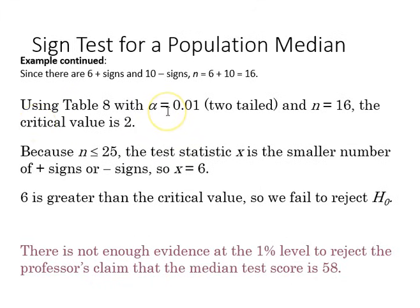Using our table with a 0.01 alpha level and N equals 16, we find our critical value is 2. N is less than or equal to 25, so the test statistic is the smaller number of plus or minus signs, so x is 6.